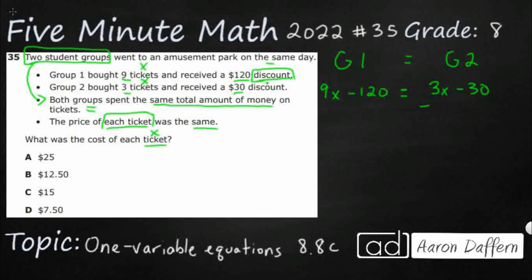So I'm going to take away 3X from this side, take away 3X from this side to keep the balanced equation. So that's going to give me 6X minus 120 equals, that's going to just cancel out to that zero. So I'm going to get negative 30. So 6X minus 120 equals negative 30.